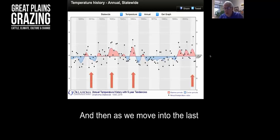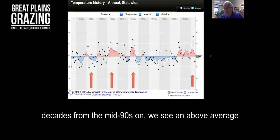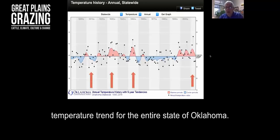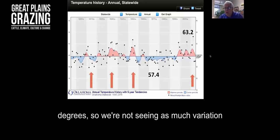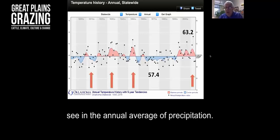As we move into the last decades from the mid-90s on, we see an above average temperature trend for the entire state of Oklahoma. The range on this is 57 degrees to 63 degrees. So we're not seeing as much variation in that annual average of temperature as we see in the annual average of precipitation.